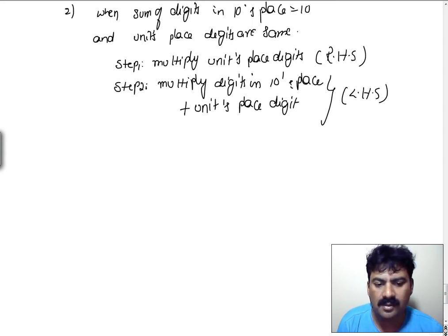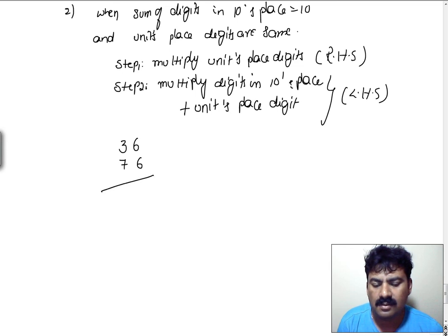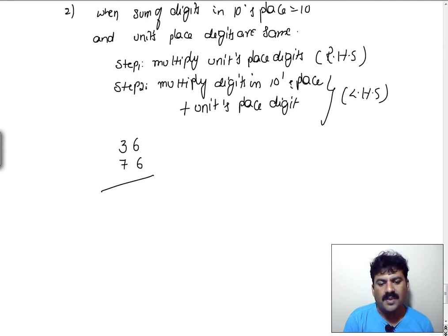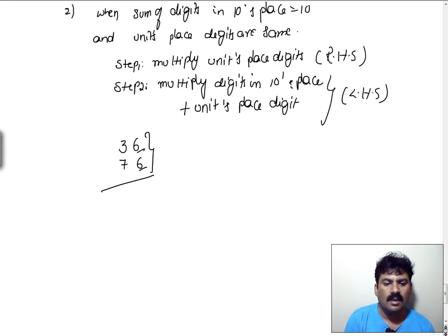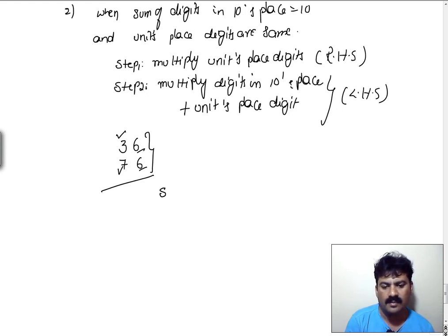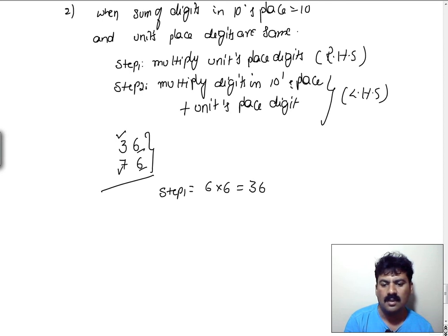Let us take a simple example: 36 and 76. If you look into this, the units place digit is the same — 6 and 6. When you consider 3 and 7: 3 plus 7 equals 10. So we can apply this technique. In step 1: 6 into 6 equals 36, and it is going to be the RHS part of the answer.